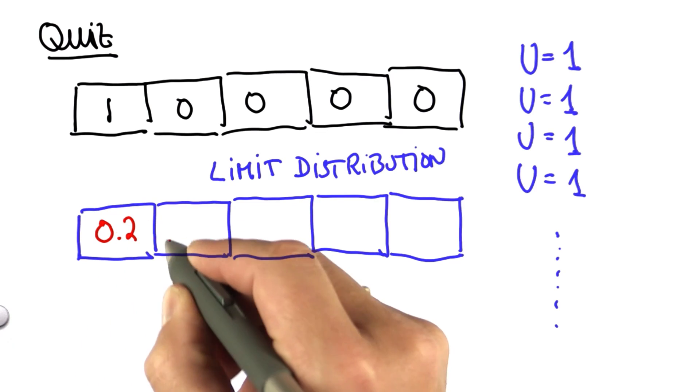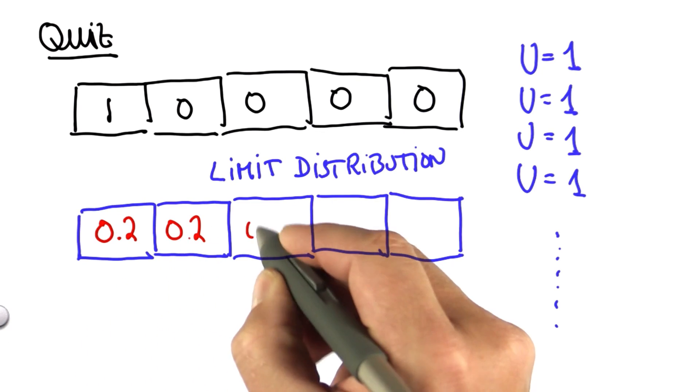And you might have guessed it correctly, it's the uniform distribution. And there's an intuitive reasoning behind this.